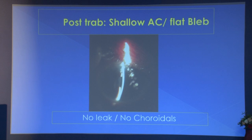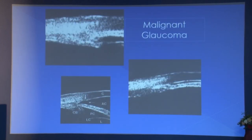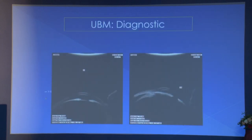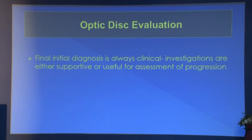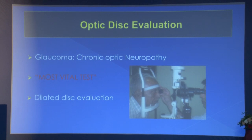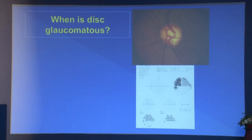UBM shows pigment dispersion with zonular-iris contact causing pigment rubbing and dispersion, and traumatic cyclodialysis. Post-trabeculectomy shallow anterior chamber causes can sometimes be determined by UBM, though doing UBM post-operatively is extremely difficult. In malignant glaucoma, specific UBM findings include anterior rotation of the ciliary body with a very shallow AC - visible both before and after treatment. Topiramate drug-induced bilateral angle closure shows regular shallowing of the anterior chamber on UBM, with ciliary choroidal effusion in these cases.